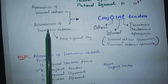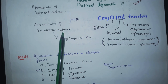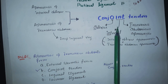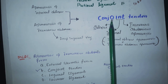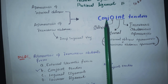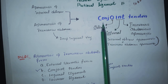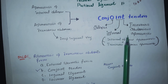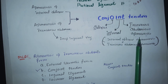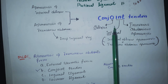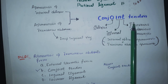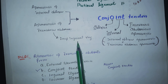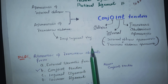The aponeurosis of the internal oblique and the aponeurosis of the transversus abdominis together form the conjoint tendon. How do you remember the conjoint tendon? In the word 'conjoint,' look at the letters O, I, and T: O is for oblique, I and T are for internal, and T is also for transversus abdominis. So internal oblique aponeurosis plus transversus abdominis aponeurosis together form the conjoint tendon, and the aponeurosis of transversus abdominis also forms the deep inguinal ring.